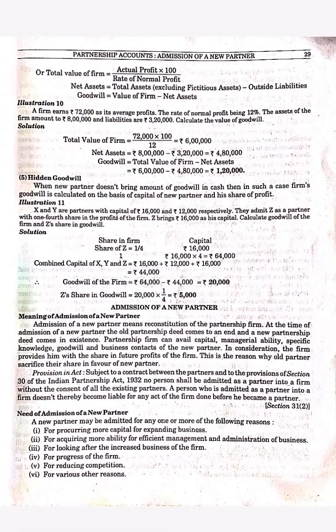There is one more formula: Goodwill = (Actual Profit × 100 / Normal Rate of Return) − Net Assets, where Net Assets = Total Assets (including fixed and other assets) minus outside liabilities. Goodwill equals the value of the firm minus the net assets.